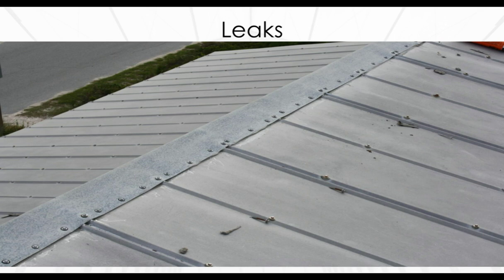Leaks are another common problem for steel buildings, generally occurring around fasteners due to gradual movement of steel sheets from weather events and settling. These leaks are difficult to find and repair and can damage the interior and contents of the building. Air leaks through the same holes also reduce insulation effectiveness. Fabric structures use welded sheets to create a continuous barrier between interior and exterior with no way for leaks to start.